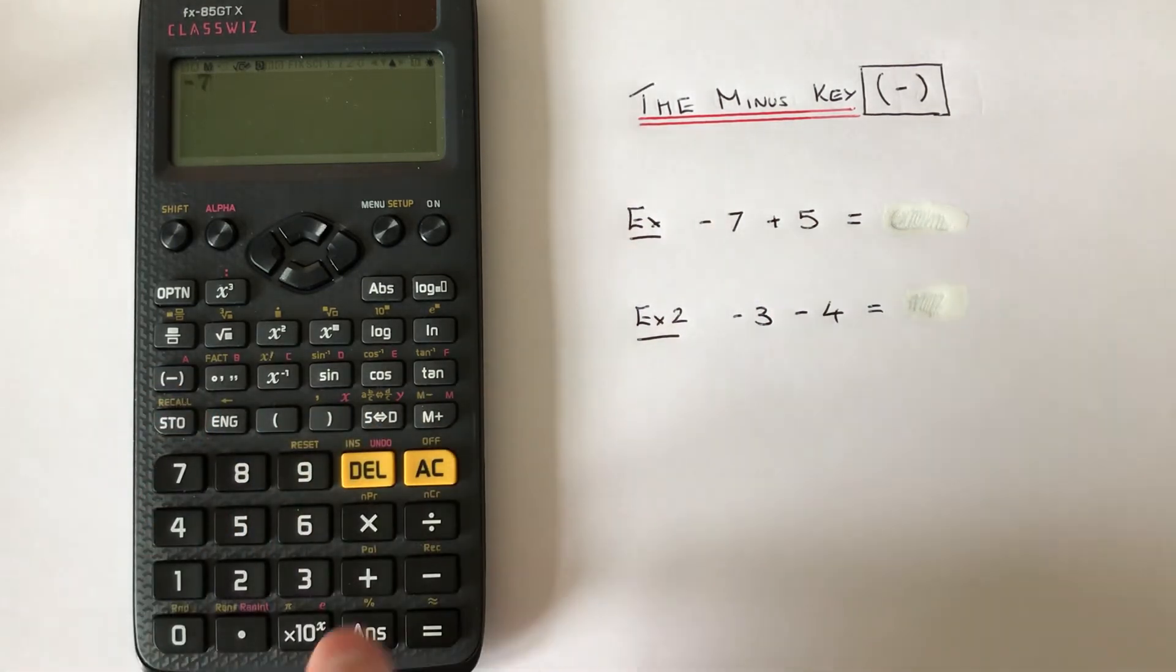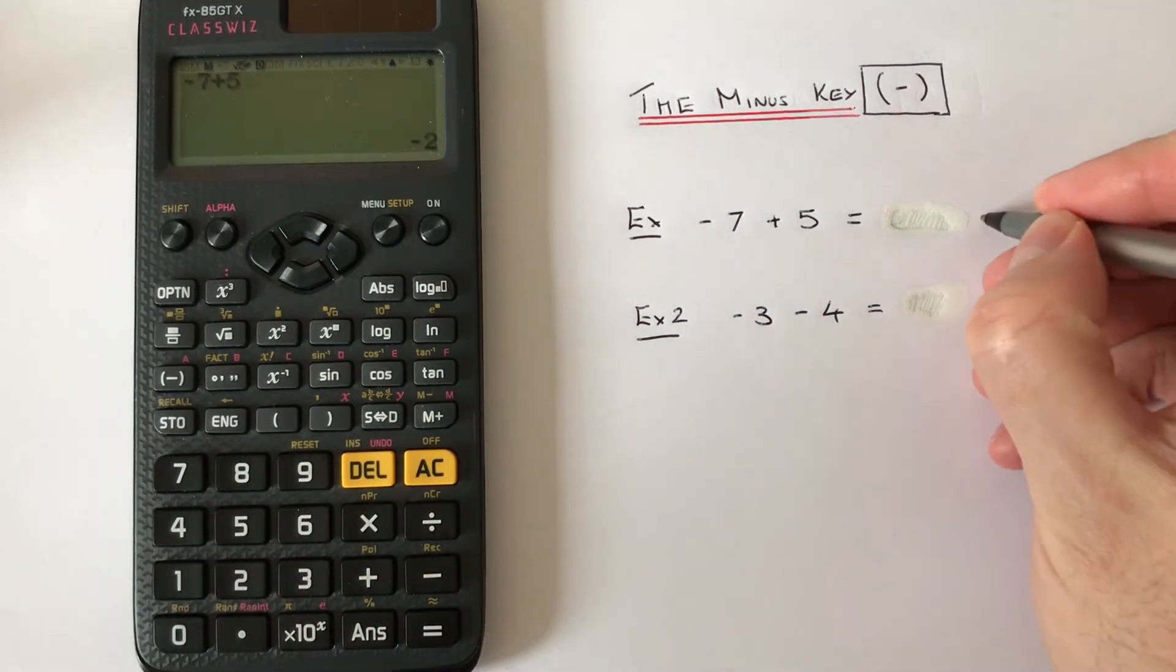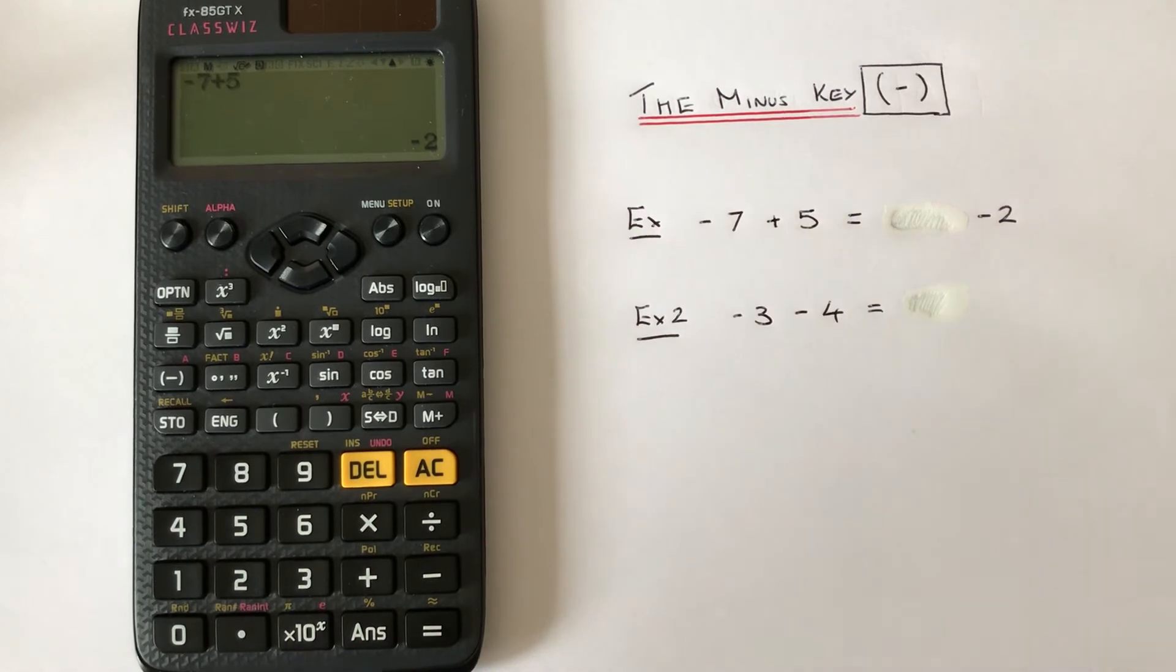Then we've got add on 5, and we get an answer of negative 2.